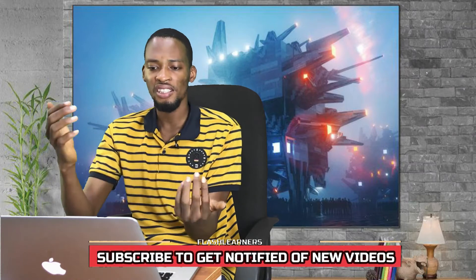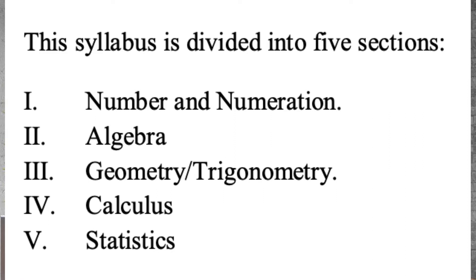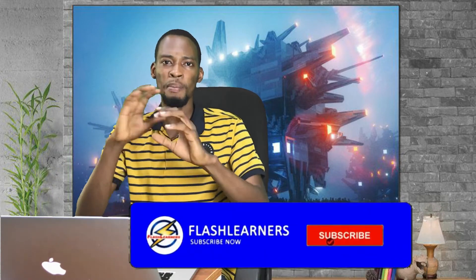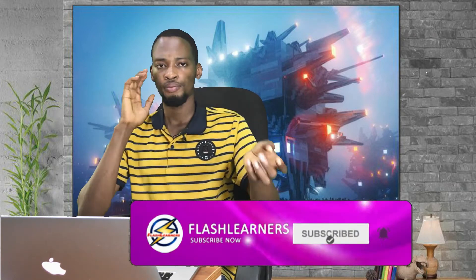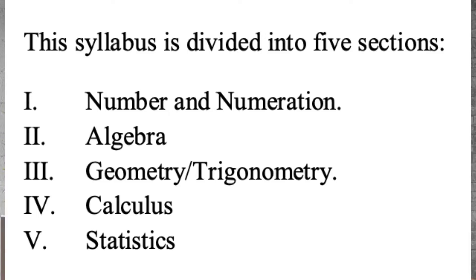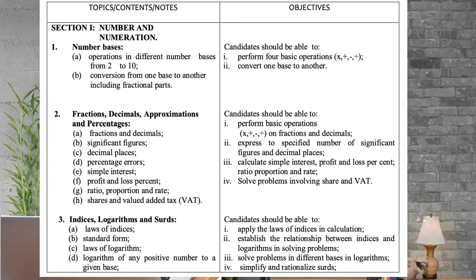The five sections are: algebra and trigonometry, statistics, number and numeration, calculus, and geometry. Calculus covers differentiation, integration, applications of differentiation — rate of change, maxima and minima. Algebra covers variation, equations, expressions, and polynomials. Statistics covers mean, median, mode, range, standard deviation, and statistical data, then probability. Geometry and mensuration covers bearings, angles, and others. Now let's look at what you're expected to know under each section.